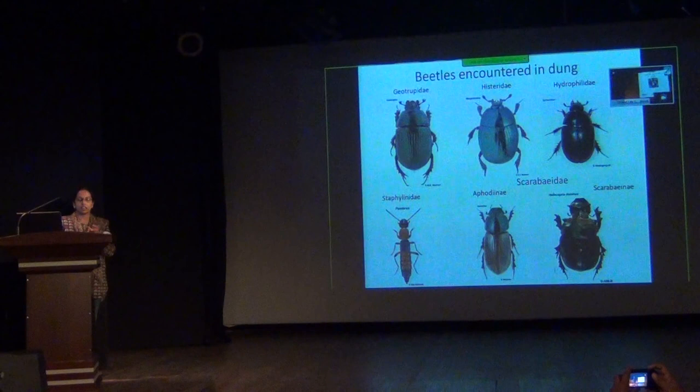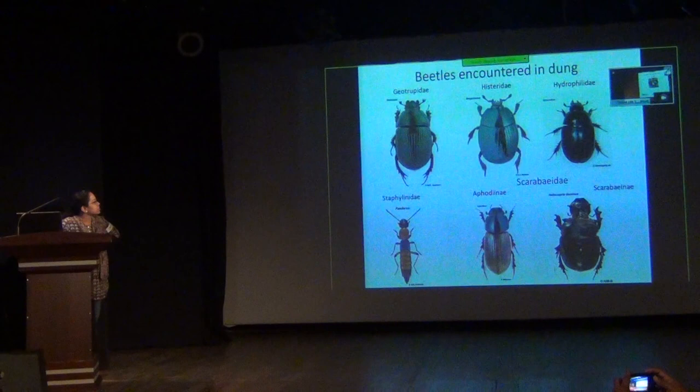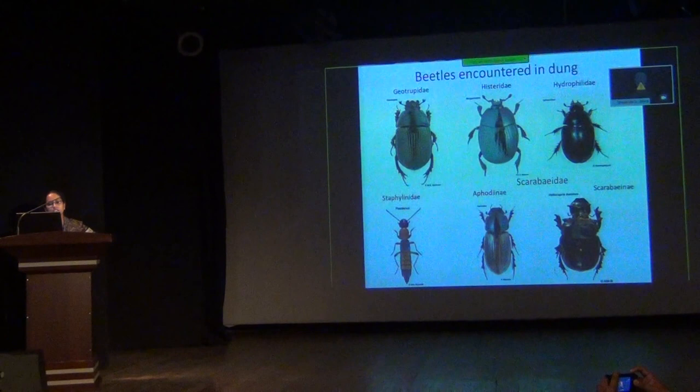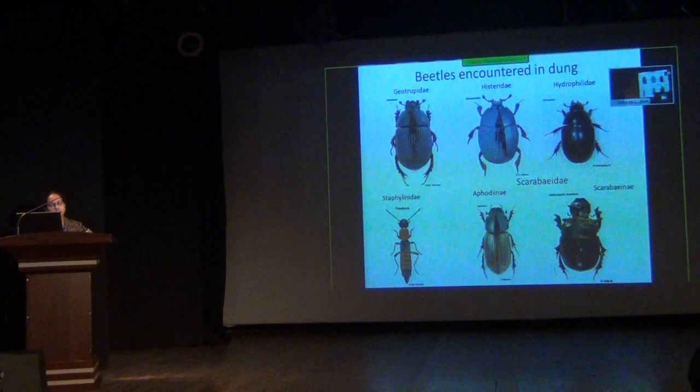If you look at the beetles which you encounter in dung, there are many beetles which belong to many different families. The Geotrupidae — the common name is the earth-boring beetle — is found in dung, but it also nests under the ground and uses leaf litter for nesting. Some of the time it is also coprophagous.